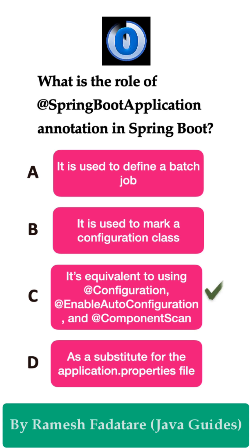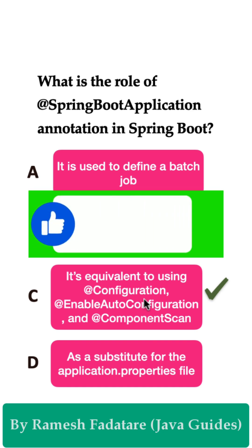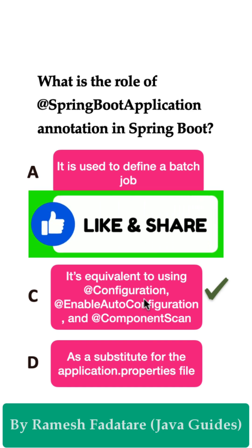The correct answer is Option C — it is equivalent to using @Configuration, @EnableAutoConfiguration, and @ComponentScan annotations. The @SpringBootApplication annotation is a combination of these three important annotations. It marks the main entry point class in a Spring Boot application, and internally uses @EnableAutoConfiguration to automatically configure the Spring Boot application based on the dependencies included in the project.